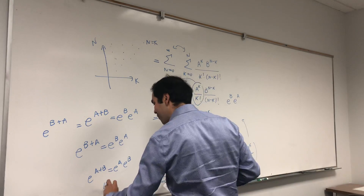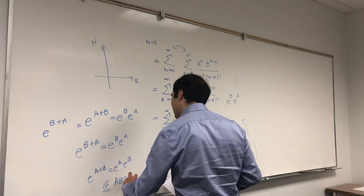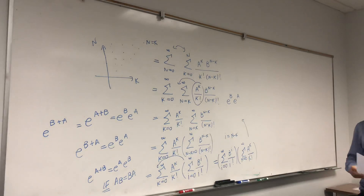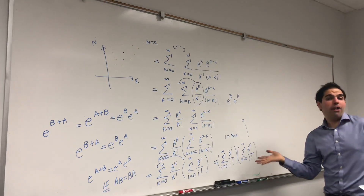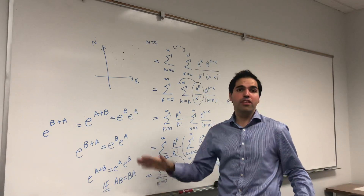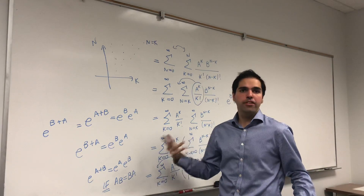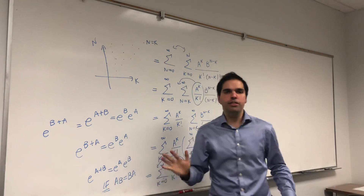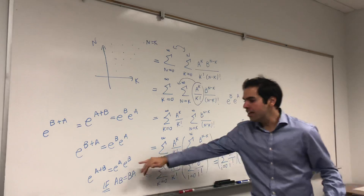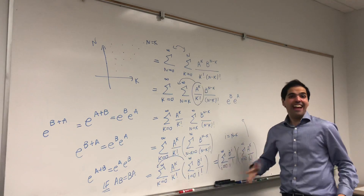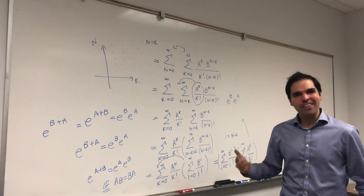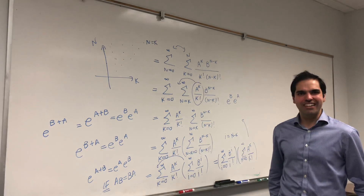What I technically showed is that e to the A+B equals e to the B times e to the A. But since A+B equals B+A, we find that e to the A+B equals e to the A times e to the B — if AB equals BA. I'm not sure if this is a necessary condition; it's possible there are other cases where equality holds, but at least we know that if AB equals BA, then this is true. I hope you liked this linear algebra extravaganza. If you want to see more math, please subscribe to my channel. Thank you very much.